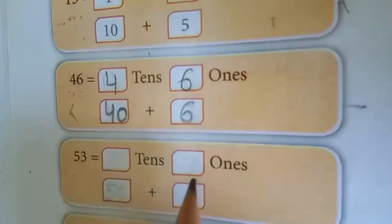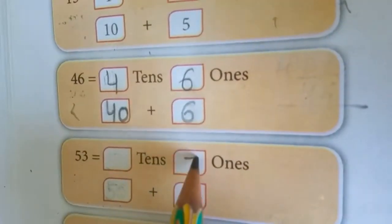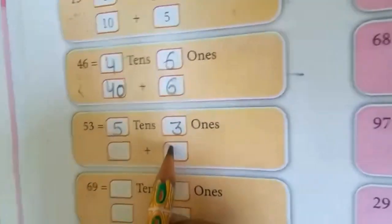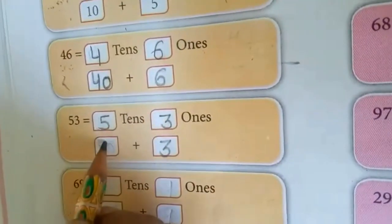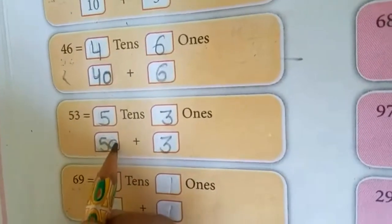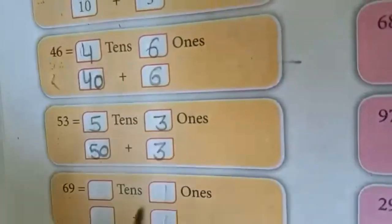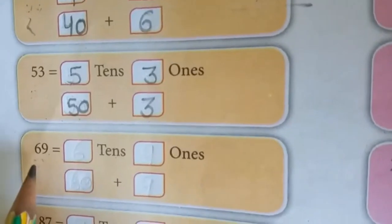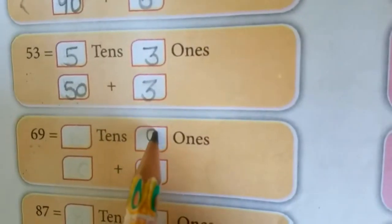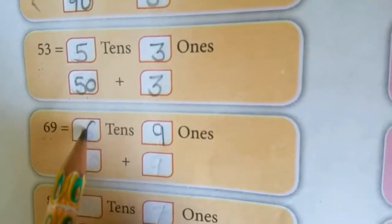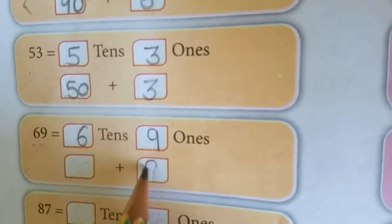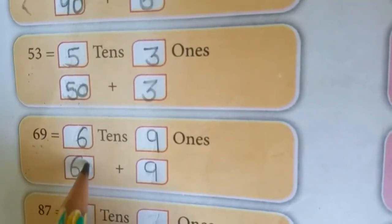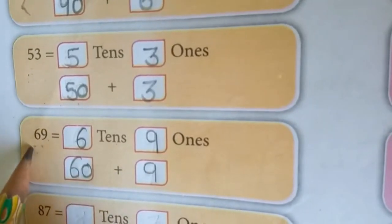53: 5 tens and 3 ones. 69: 9 ones, 6 tens — 60 plus 9 ones makes 69.